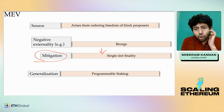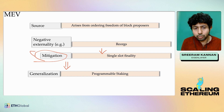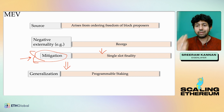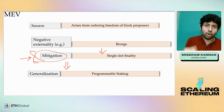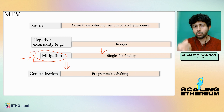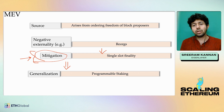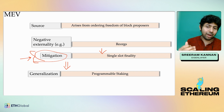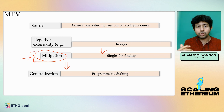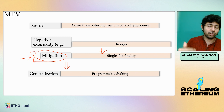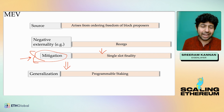We can think about generalizing this. Single slot finality is basically a commitment from block proposers to hold a certain rule — even though they have ordering freedom, they cannot exceed a certain bound because they've made a commitment. In the case of finality, that's a commitment not to re-org, enforced through slashing. If there were a mechanism to do programmable staking and slashing, block proposers could commit to more such rules, giving rise to interesting mechanisms to manage MEV.